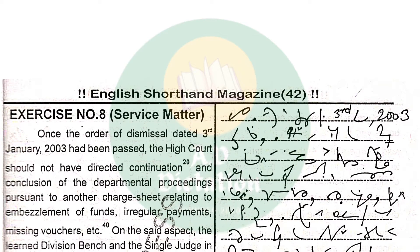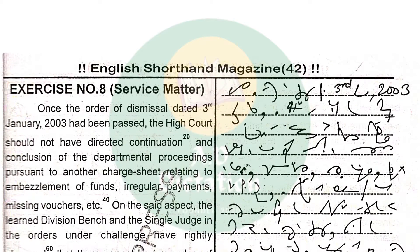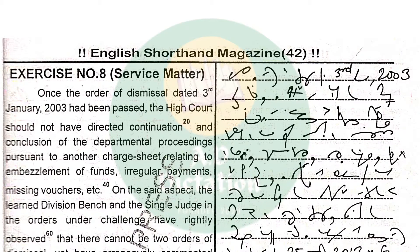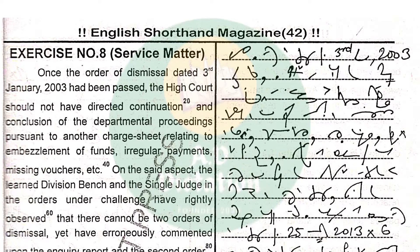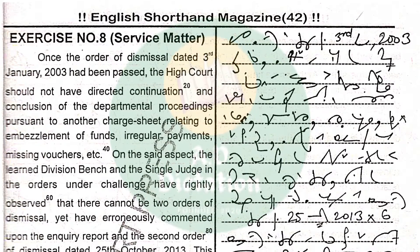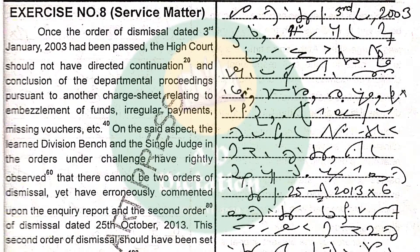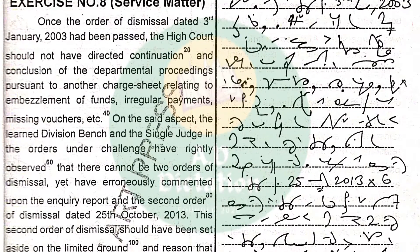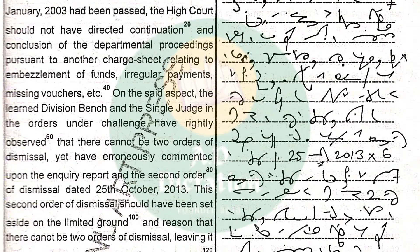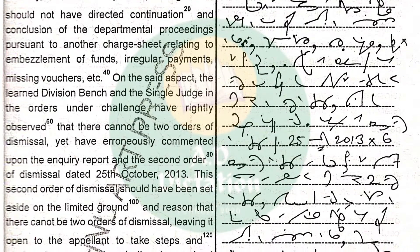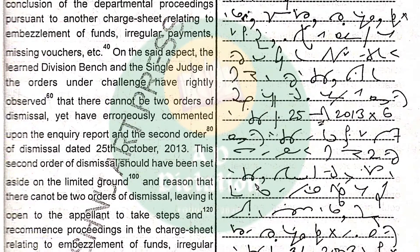Once the order of dismissal dated 3rd January 2003 had been passed, the High Court should not have directed continuation and conclusion of the departmental proceedings pursuant to another charge sheet relating to embezzlement of funds, irregular payments, missing vouchers, etc. On the said aspect, the Division Bench and the single judge in the orders under challenge have rightly observed that there cannot be two orders of dismissal, yet have erroneously commented upon the inquiry report and the second order of dismissal dated 25th October 2013.